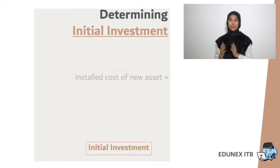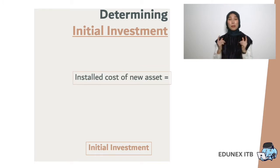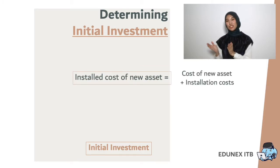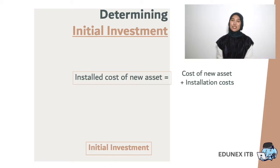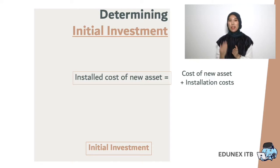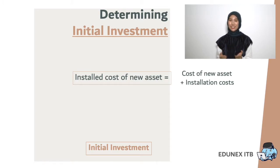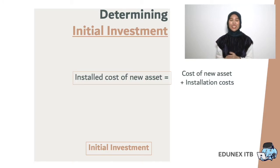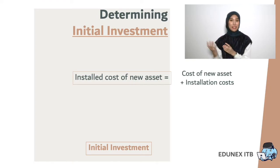We start from calculating the installed cost of new assets. You must include the installation cost after the cost of purchasing new assets. For example, if your company is considering buying a new computer, you may need to buy an updated application or train your employees to use it. All the expenses to upgrade the application or system are called the installation cost.